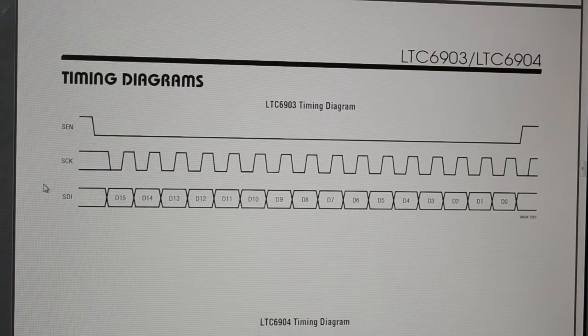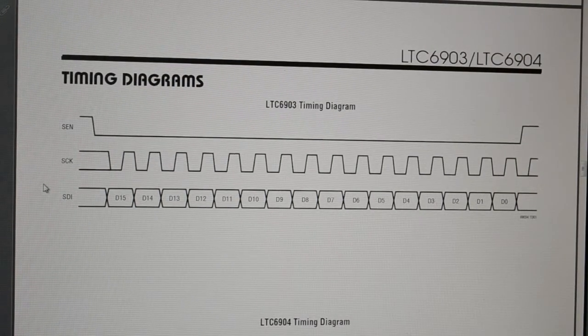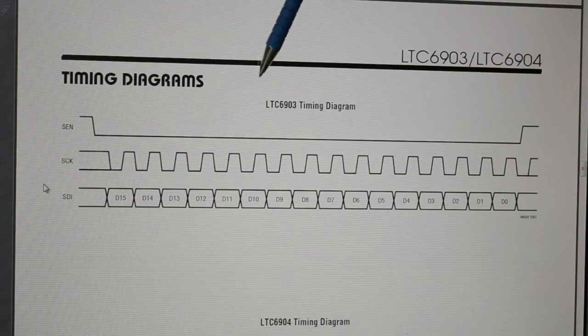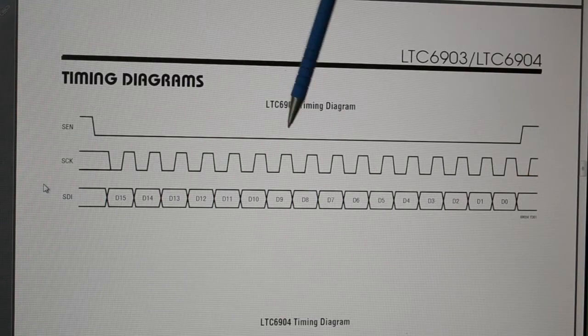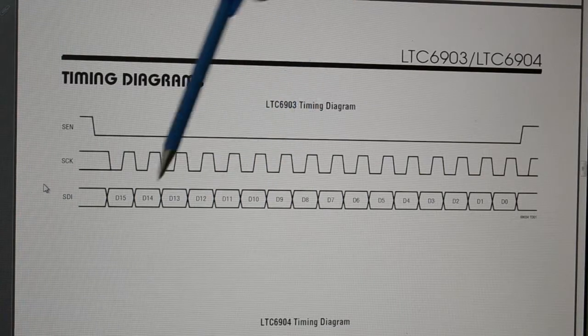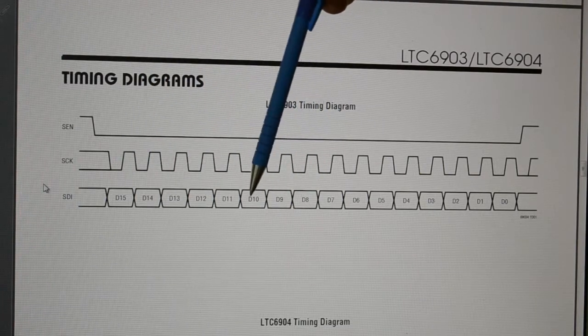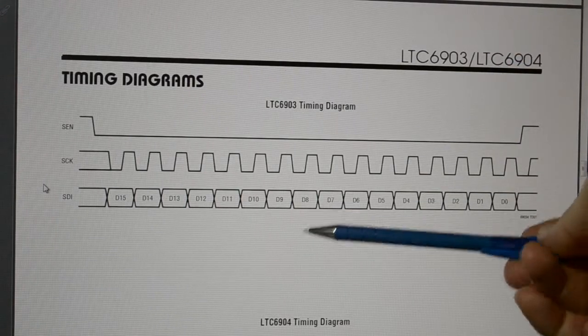So this is their timing diagram, and they talk about 16 bits for the whole transfer. But as I said, the LTC 6903, which works on SPI, looks for the most significant bits first, clocks those in, and if you stop after 8 bits and don't transmit any more, and then bring the SEN, which is the chip select, bring that up.